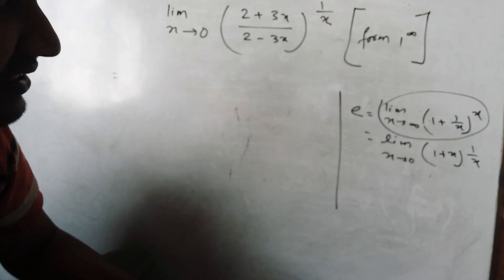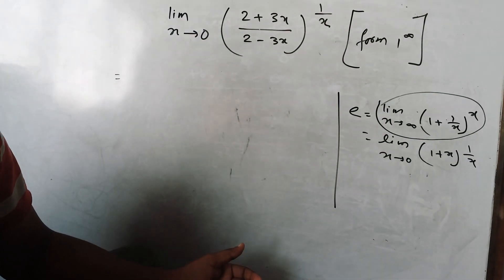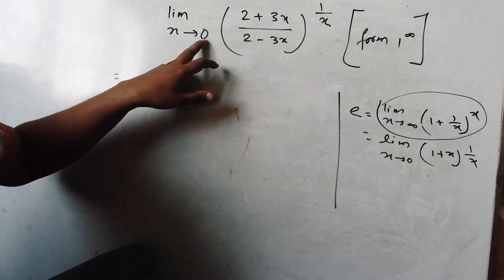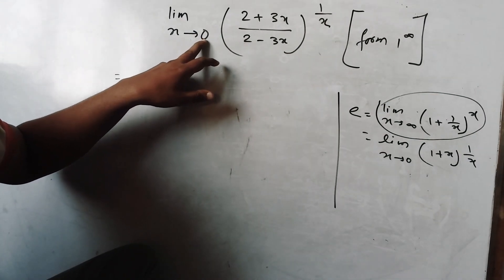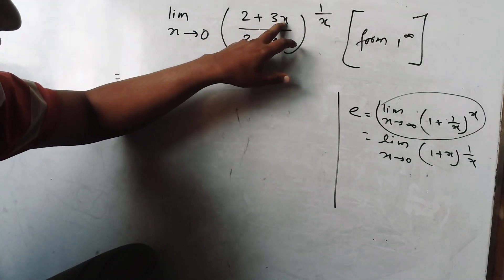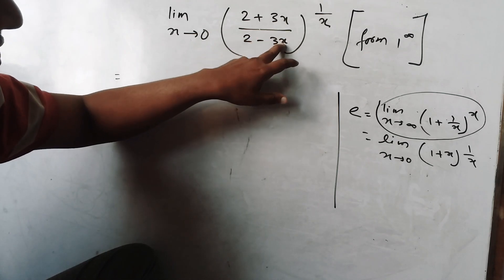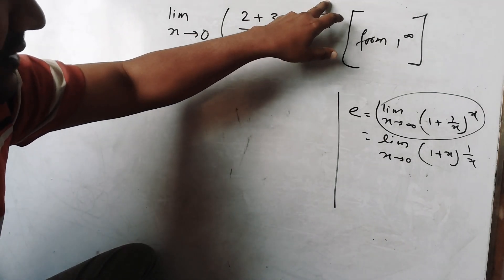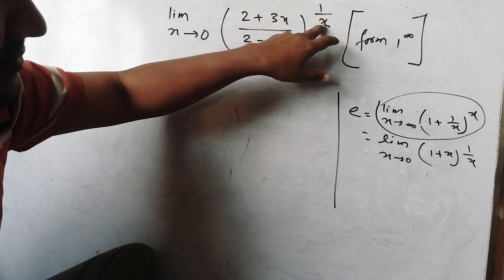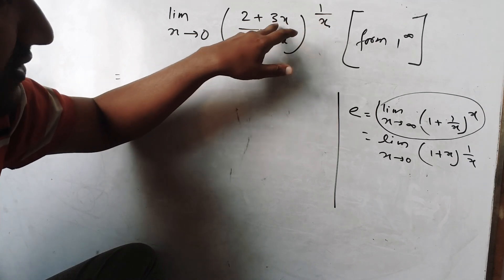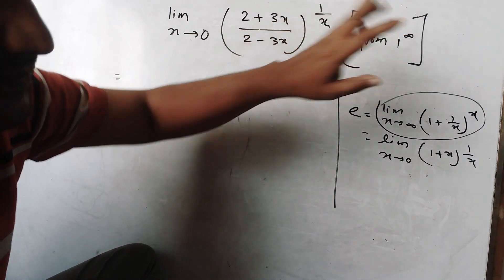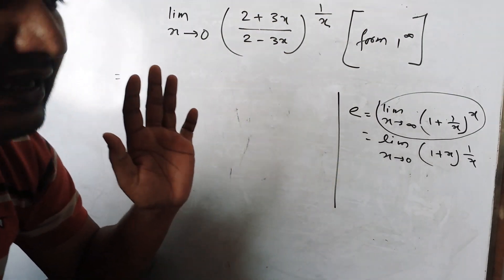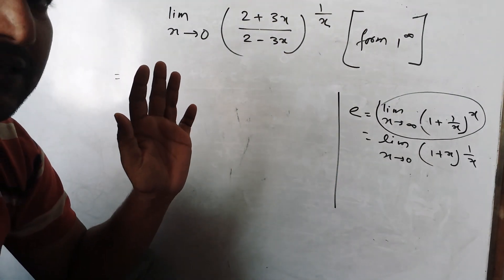The power is a variable. As x tends to 0, we get 2 by 2 which is 1, and 10 to the power 0 is 1, so as x tends to 0 we get 1 to the power infinity — which is an indeterminate form. We should proceed to resolve this.